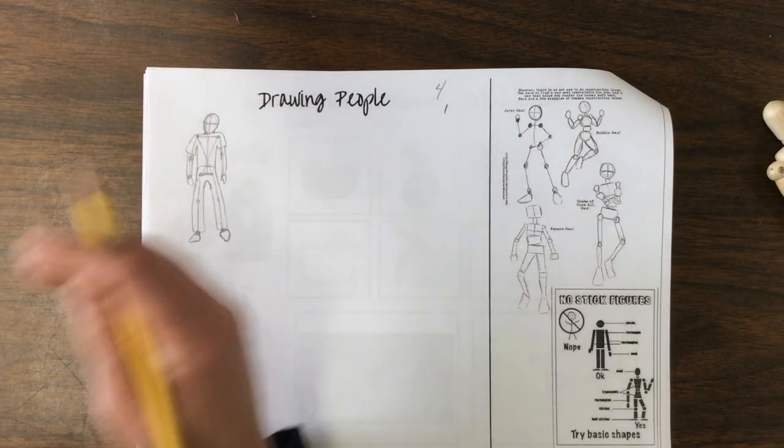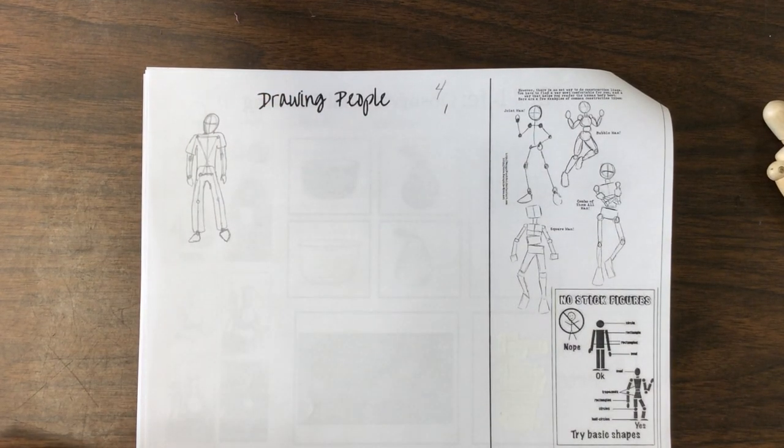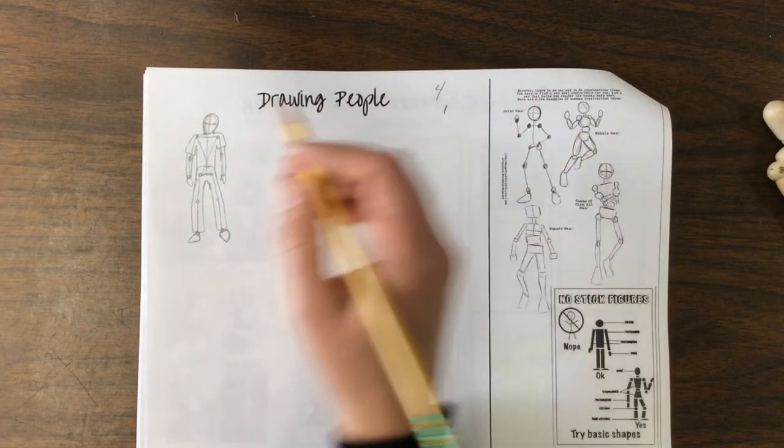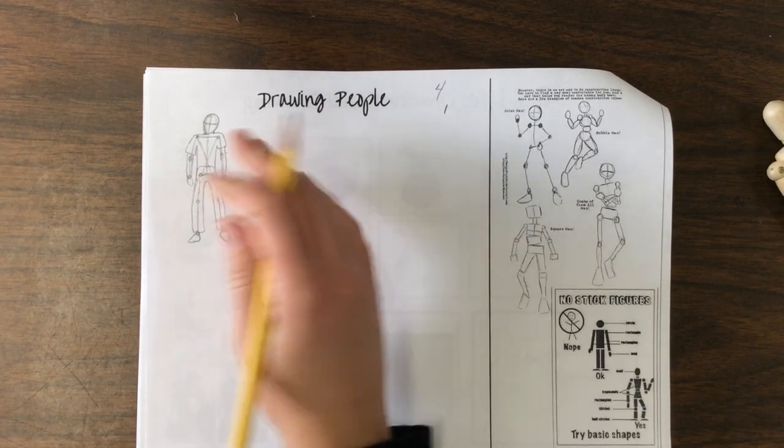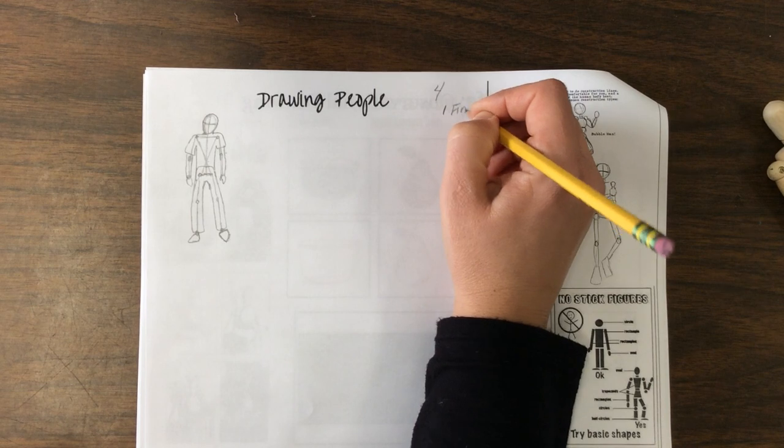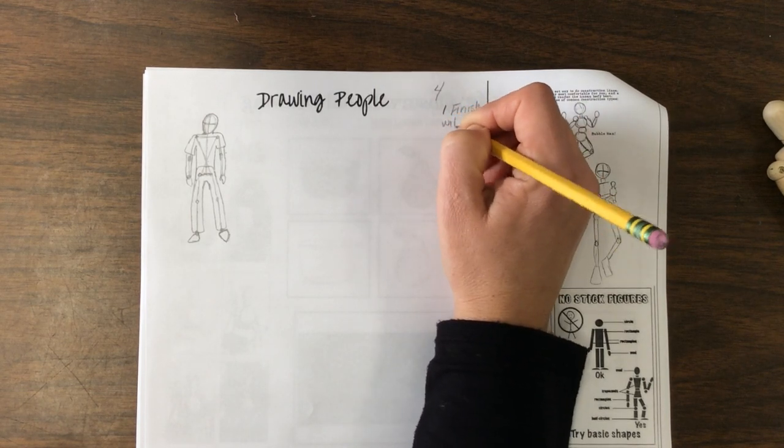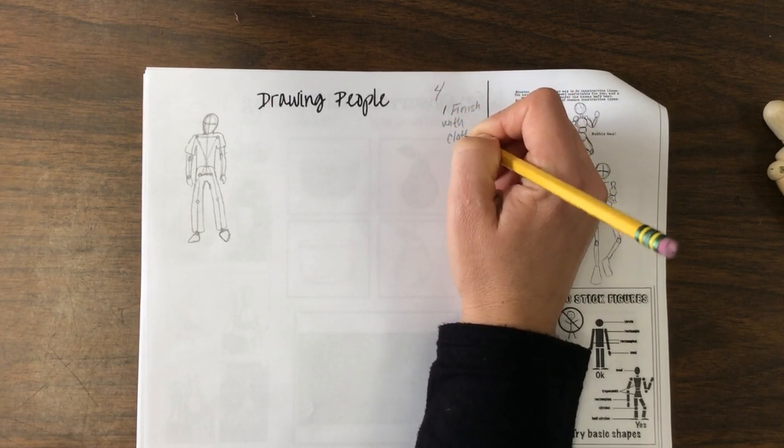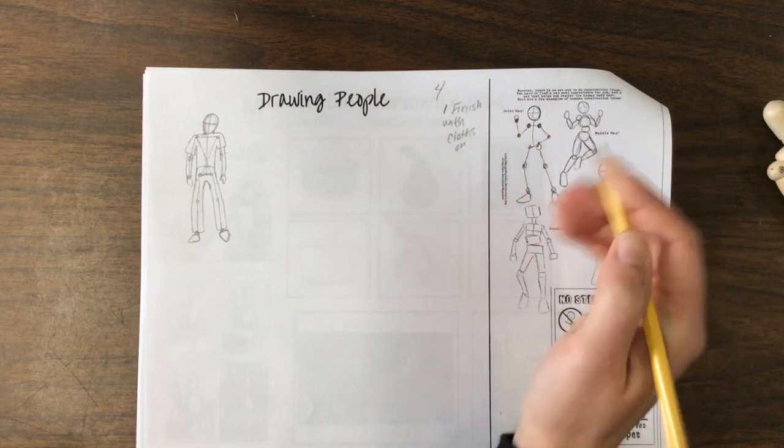Head. And how you want to do the head is up to you. You want to give them a hat on, hair, face, that's absolutely fine. So mine plus four. So you're going to have five people drawing on here. One of them is finished with clothes on.